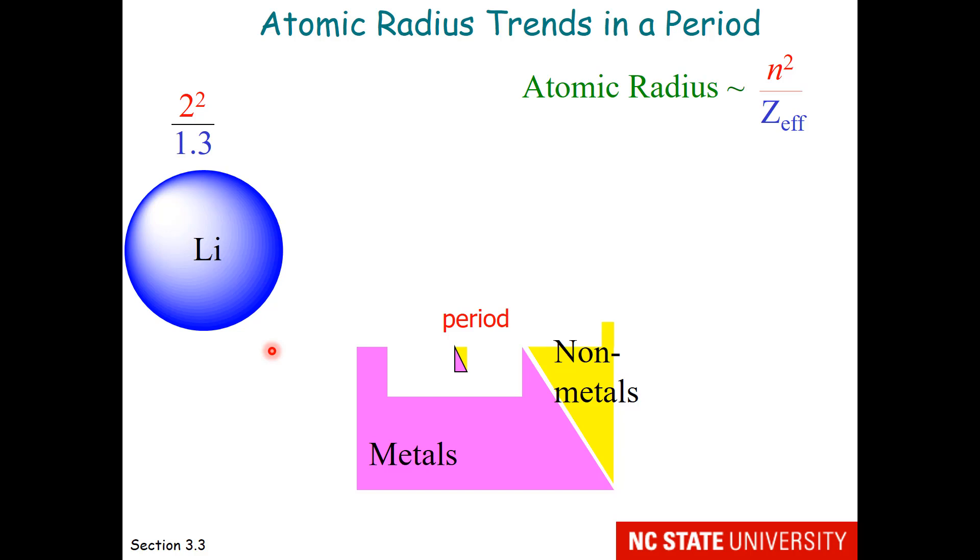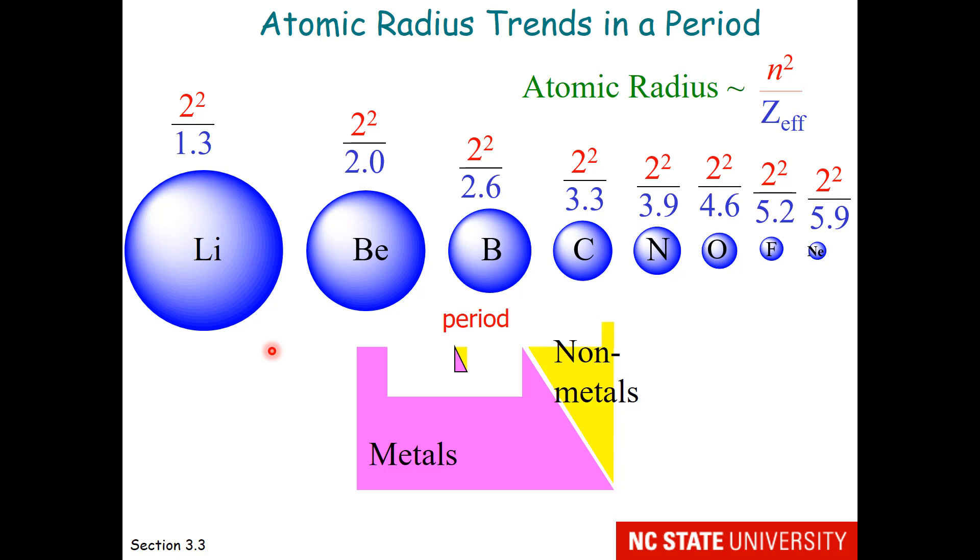It increases. So if the denominator increases, the value of the ratio becomes smaller. Beryllium is smaller, and boron is smaller still, all the way to neon. Neon is the smallest atom in the second period.